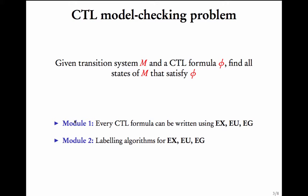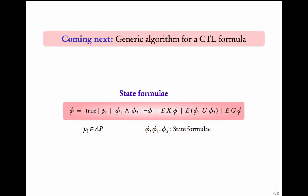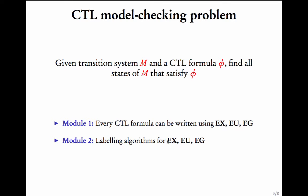In module 1, we saw that every CTL formula can be written using EX, EU, and EG — this was called the existential normal form. In module 2, we gave algorithms for model checking CTL formulas of the forms EX, EU, or EG, where the inner formula was a simple atomic formula like P1, P1 and P2, or P1 and not P2.